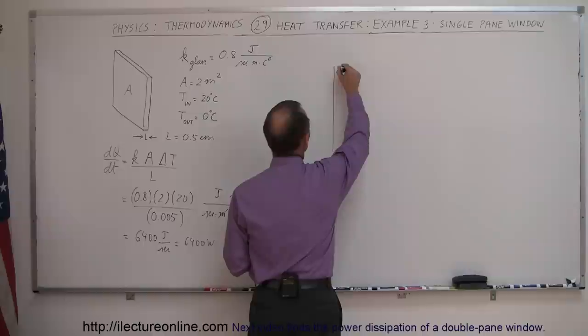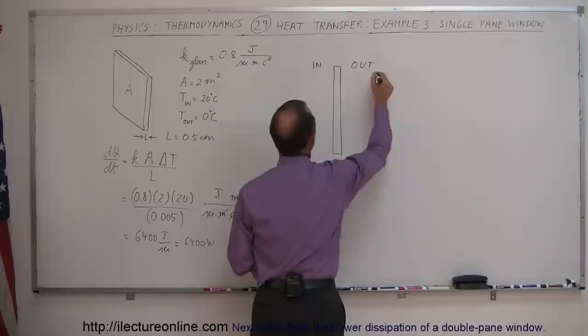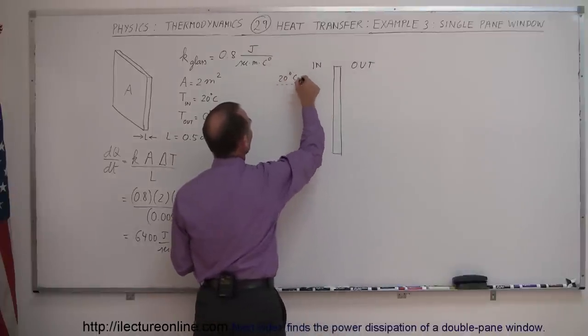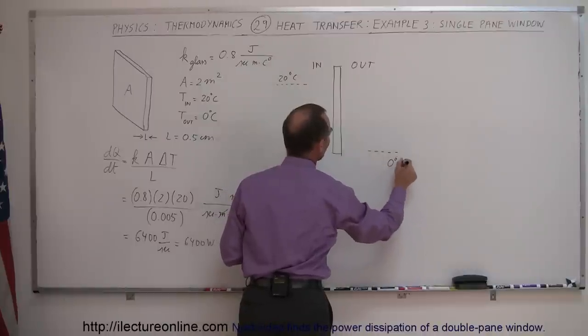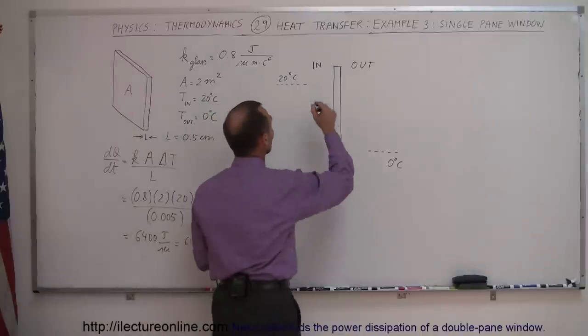This is the glass window cross-section. This is the inside, this is the outside. Even though the temperature inside is 20 degrees Celsius and outside is 0 degrees Celsius, that's not the case for the actual surface temperature of the glass.